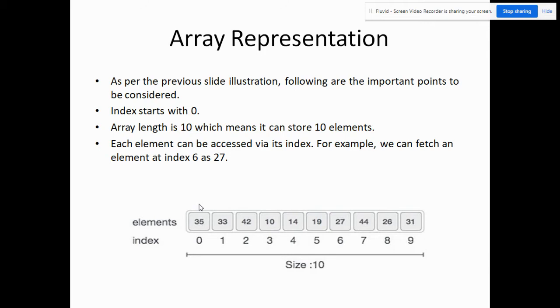We can see that in our illustration below. Each element can be accessed via its index. For example, we can fetch an element at index 6. So the value is actually 27.